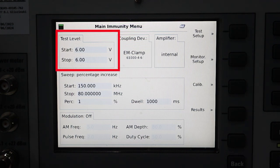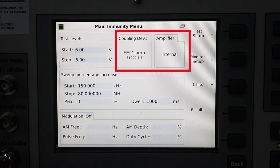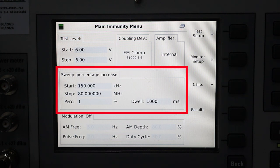You can see we have a couple different boxes here. We have a test level currently at six volts. We have our coupling device which is an EM clamp in accordance with IEC 61000-4-6. We have an internal amplifier selected, and then we have our sweep from 150 kilohertz to 80 megahertz. So everything looks good there.